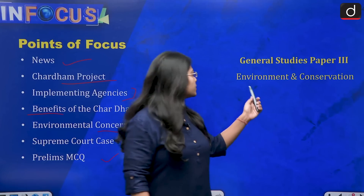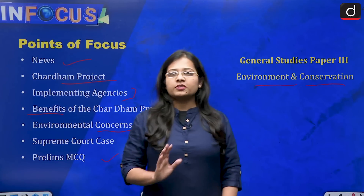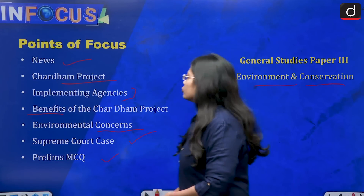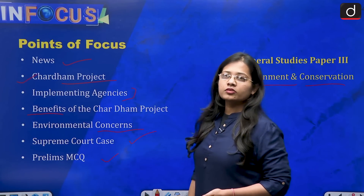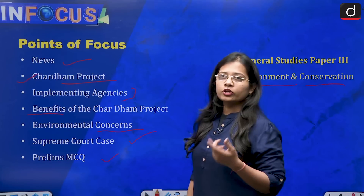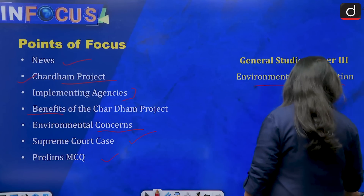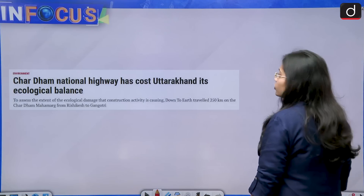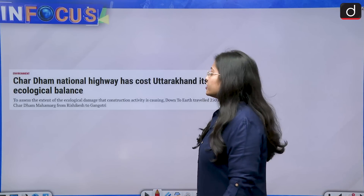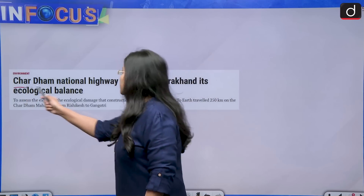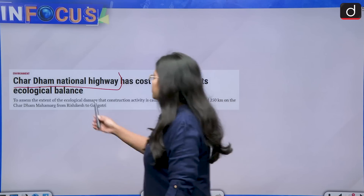This topic is relevant from General Studies Paper 3, that is Environment and Conservation. From an exam perspective, it is important to know about the Char Dham Project, the agencies associated with it, its benefits, and its concerns. The news has been taken from Down to Earth, which states that the Char Dham National Highway has cost Uttarakhand its ecological balance.